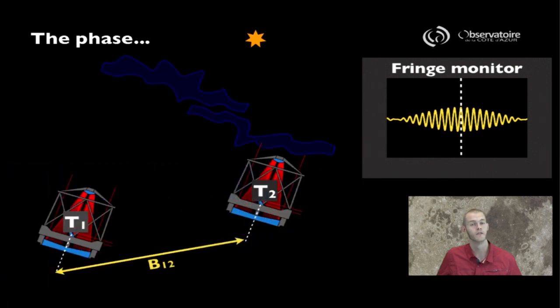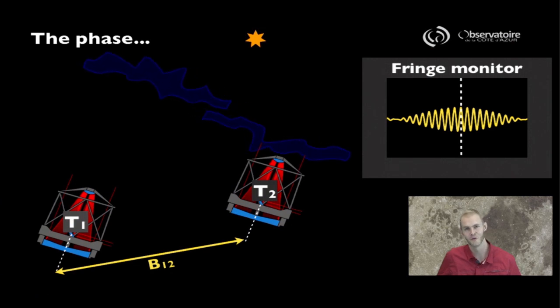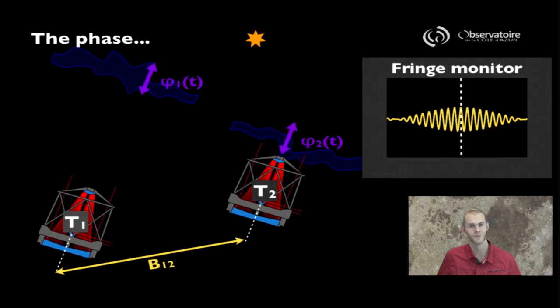Now, there is a piece of information, a detail that we've overlooked so far, and that is the presence of the atmosphere above our interferometer. In the same way the presence of the atmosphere did affect measurements, the images acquired by single telescopes reducing diffraction-limited images to seeing limited images, the presence of the atmosphere does also affect the performance of our interferometer.